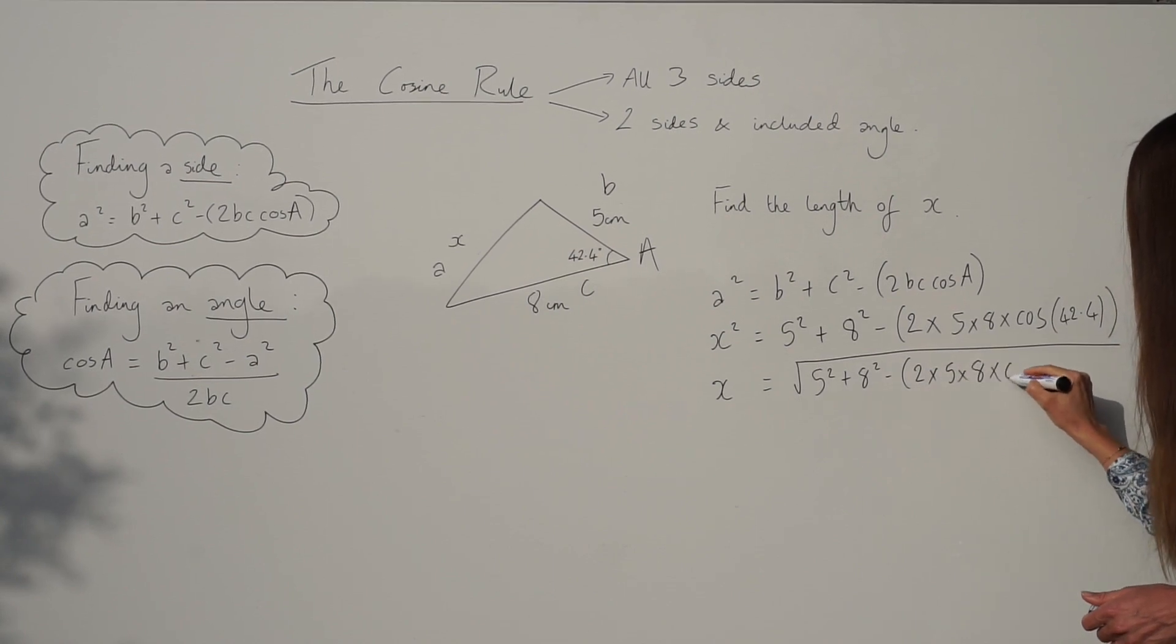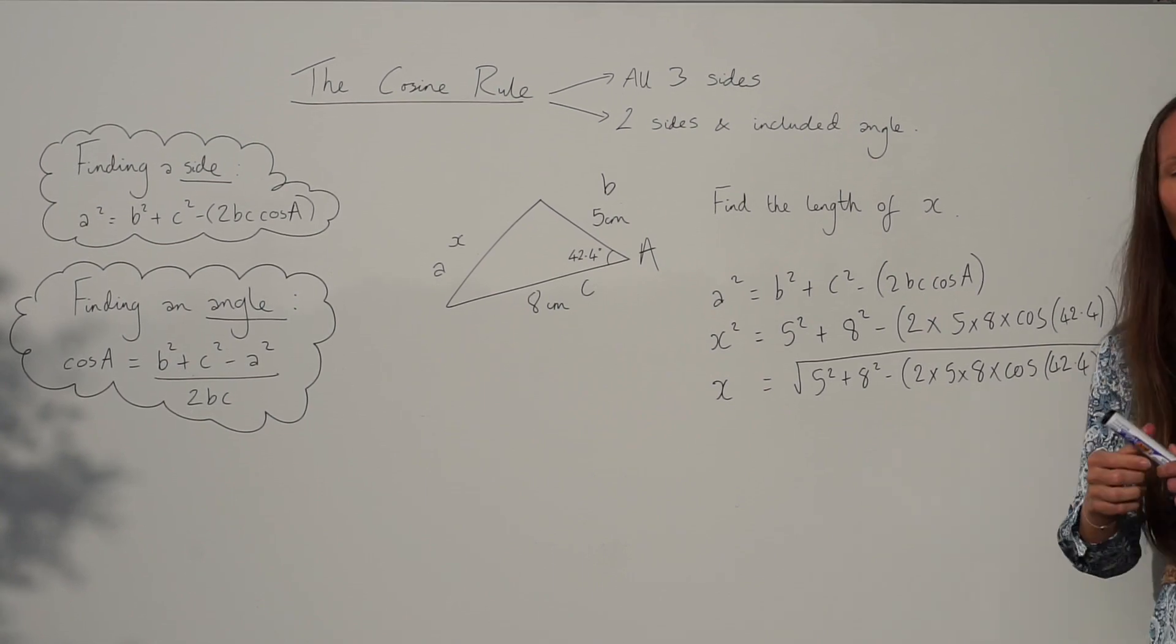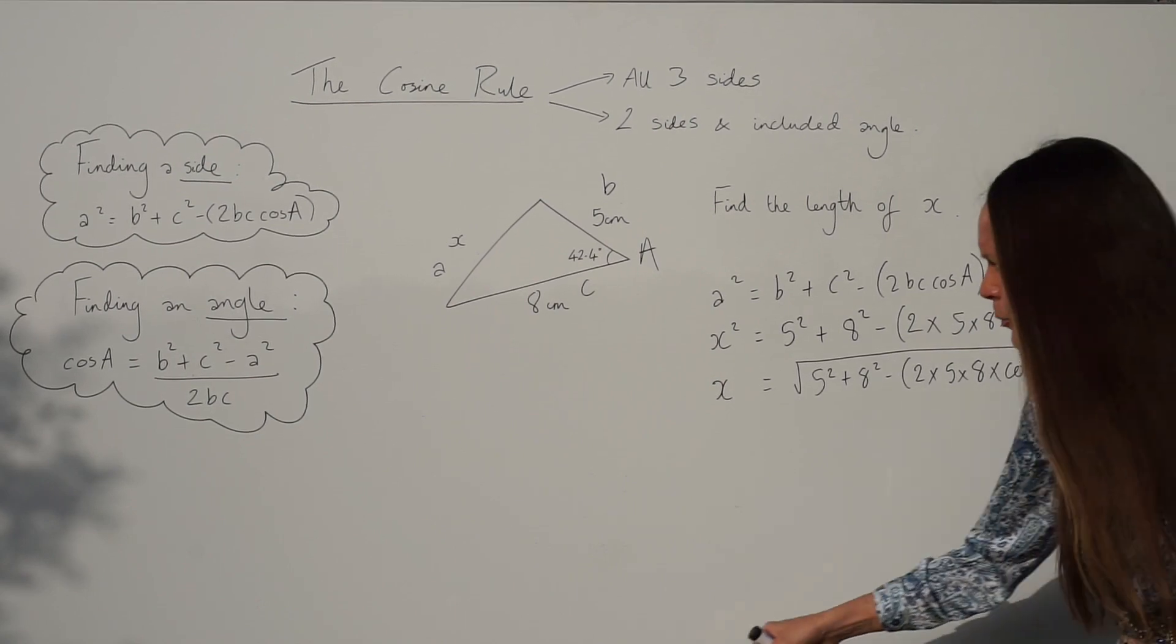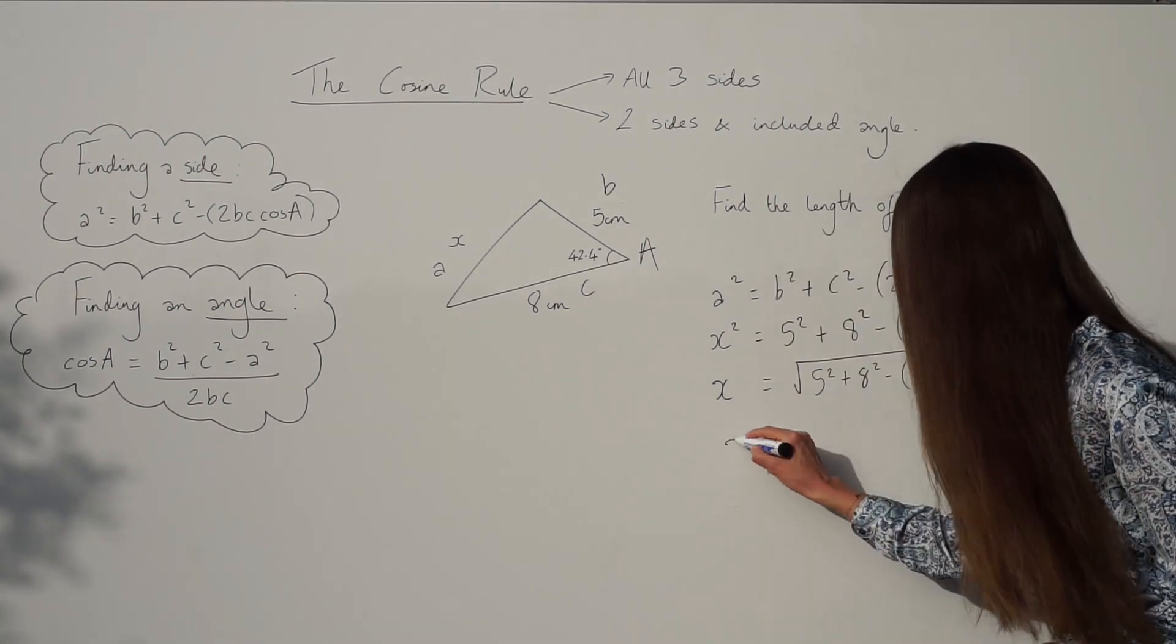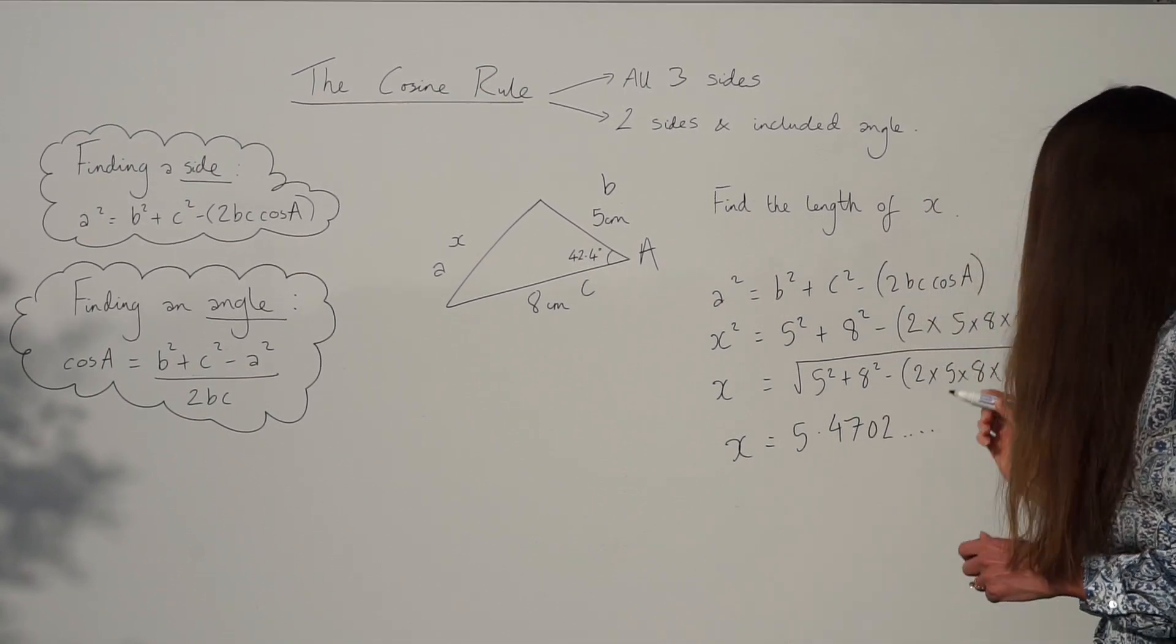Okay, so you're just putting this into the calculator. Just be really careful when you do put that in the calculator that you close your brackets. Okay, otherwise you'll get an error on the calculator. So when you put that into the calculator you should get 5.4702 and so on.